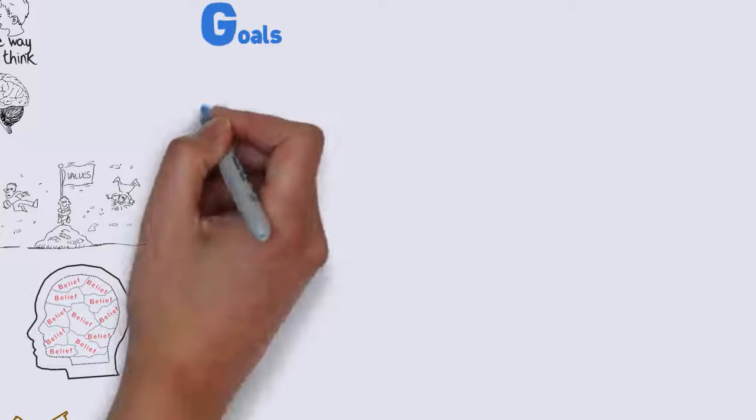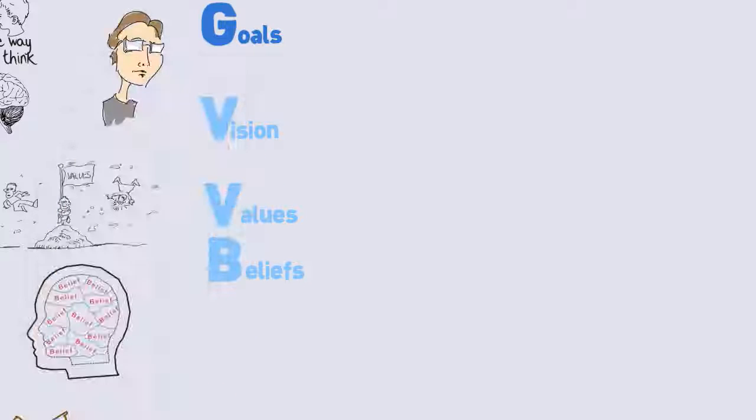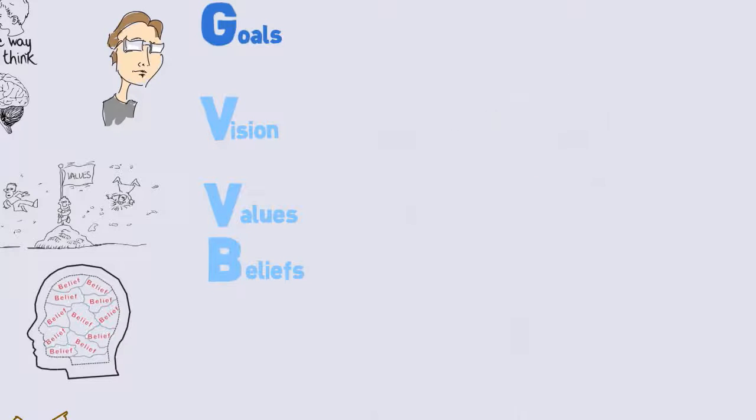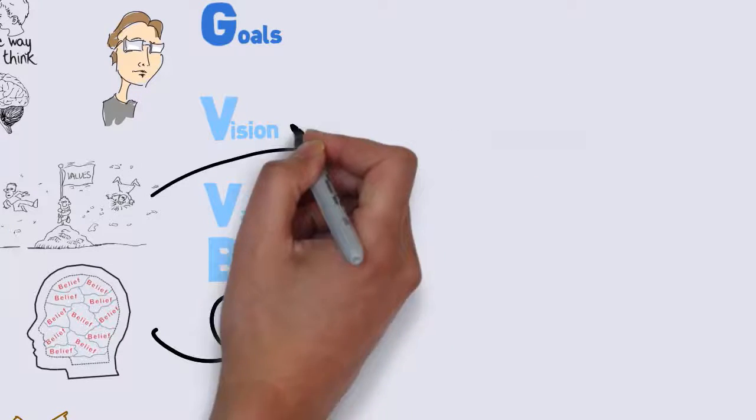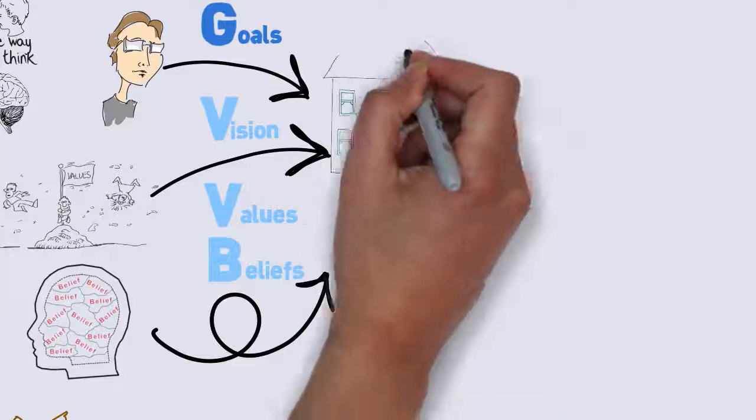So why is there no V and B and V? Well, basically it didn't make for a memorable mnemonic. Our goals, values, and beliefs determine what we want from life. And that's everything that we do or do not do.